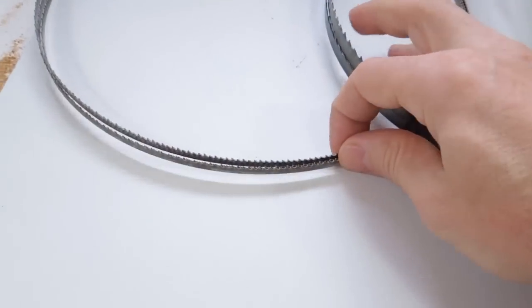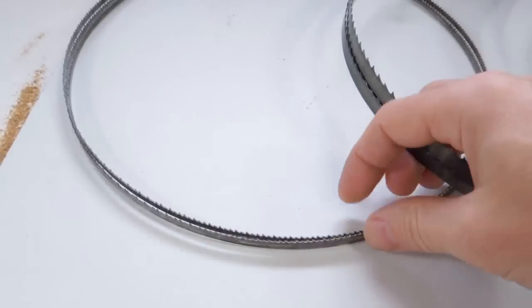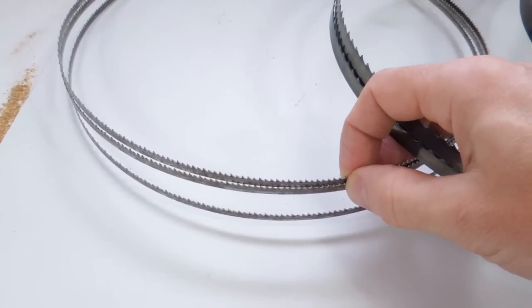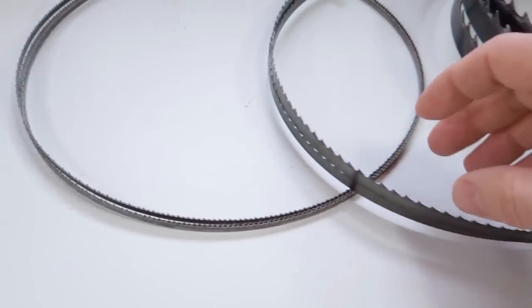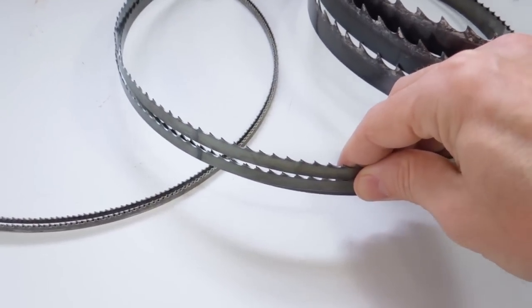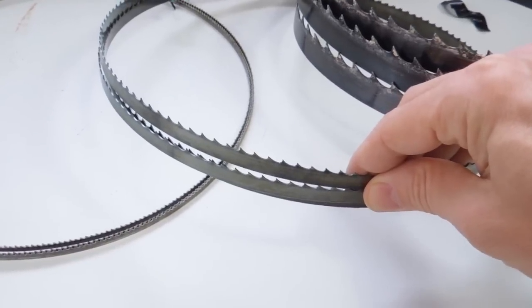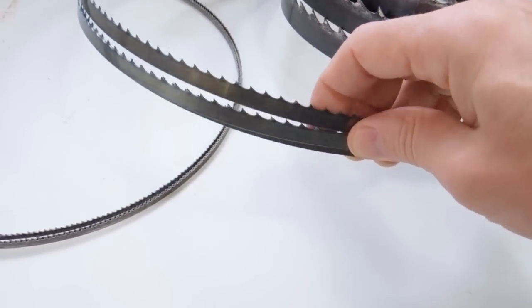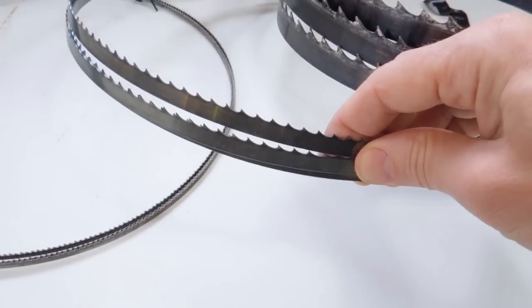So for intricate work I would use a narrow blade like that. And this one's got about 10 teeth per inch or about 2.5 millimeters between the teeth. And for a bit heavier work there's a blade like this. You can do a little bit of resawing with this blade. It's got about 4 teeth per inch or about 6 millimeters per tooth. And it's also a bit wider, about 12 millimeters wide.